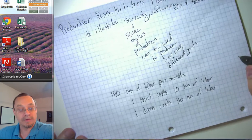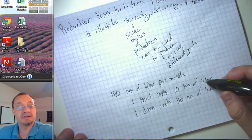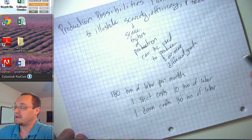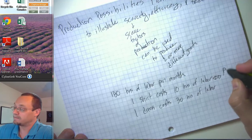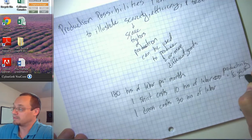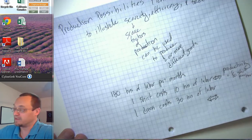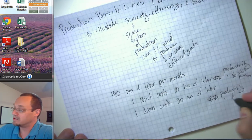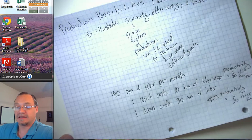Notice that I can describe this either in terms of the cost — the time cost — or in terms of productivity. If one shirt costs 10 hours of labor, it's equivalent to saying that your productivity for shirts equals 1/10 of a shirt per hour. And if one dress costs 30 hours of labor, then your productivity in dressmaking equals 1/30 of a dress per hour.